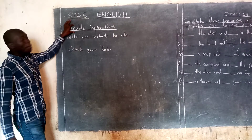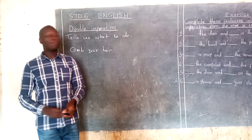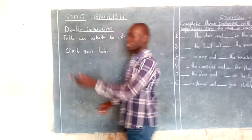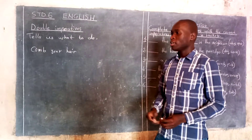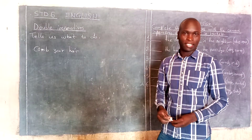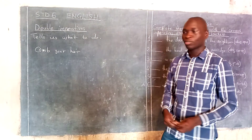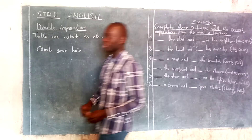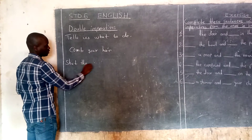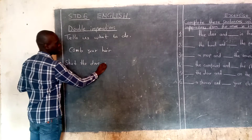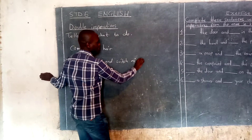But when it comes to a double imperative, we are going to be given two instructions. For example, let's think of a door in our class. We say: 'Shut the door and switch on the lights.' That's what you call a double imperative.